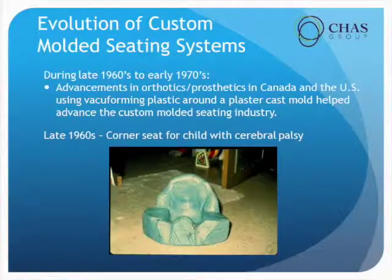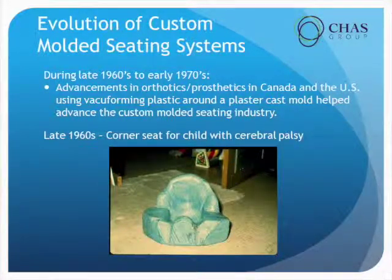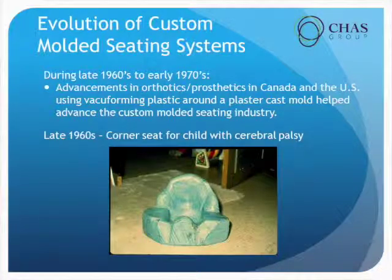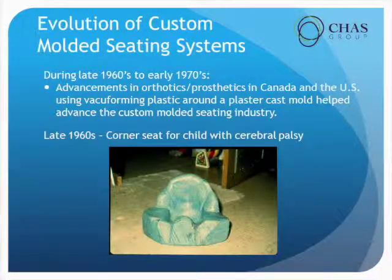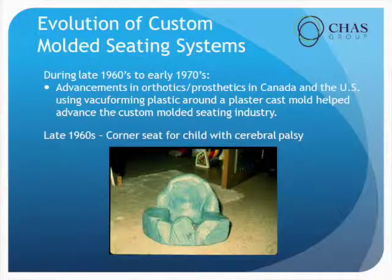During the late 60s and early 70s they continued to advance orthotics and prosthetics — vacuum forming plastics around cast molds. This is an early corner seat for a child with cerebral palsy.